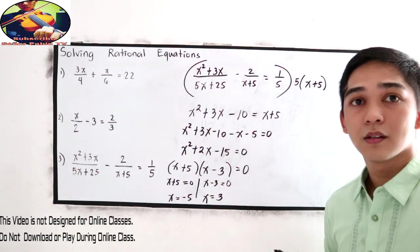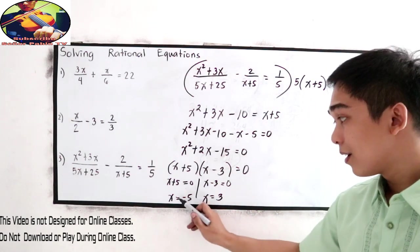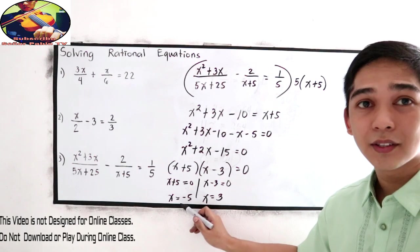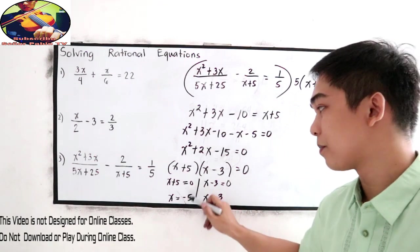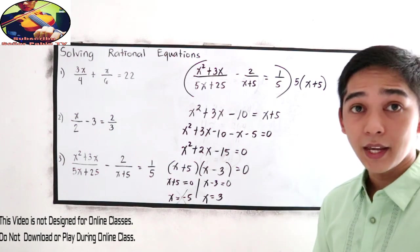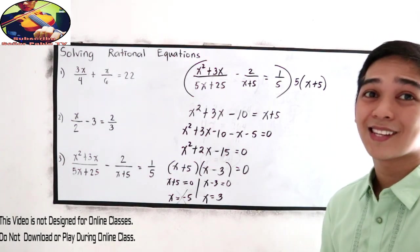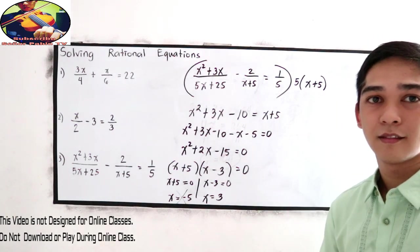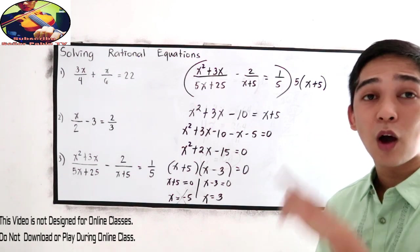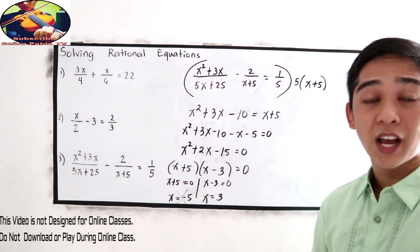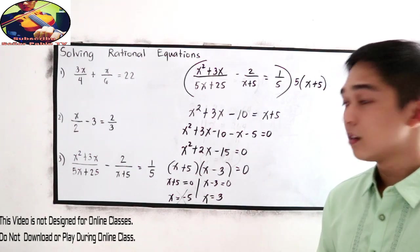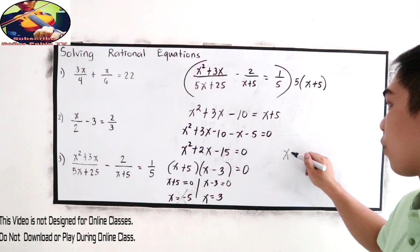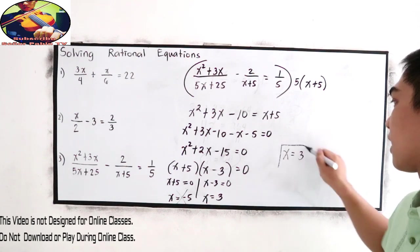Take note that negative 5 is excluded. So this will become excluded. Why? Because that is not part of our domain. Review our domain of rational expressions if you want to answer why. Then of course, our x is positive 3.